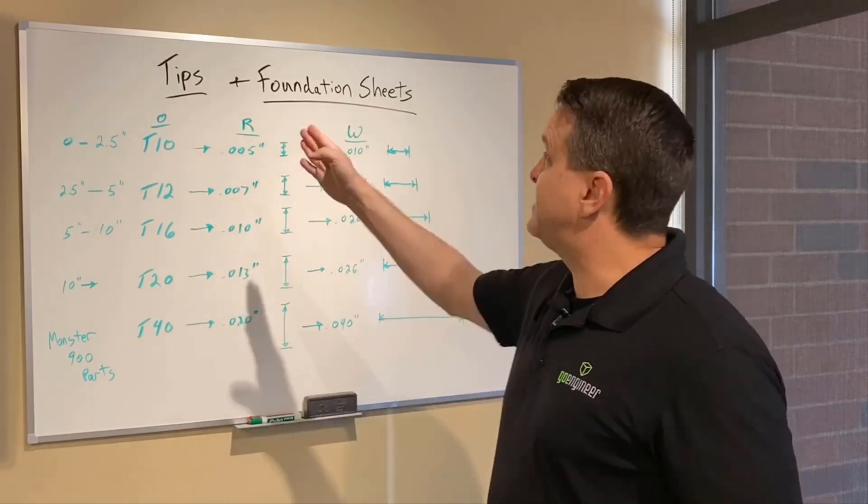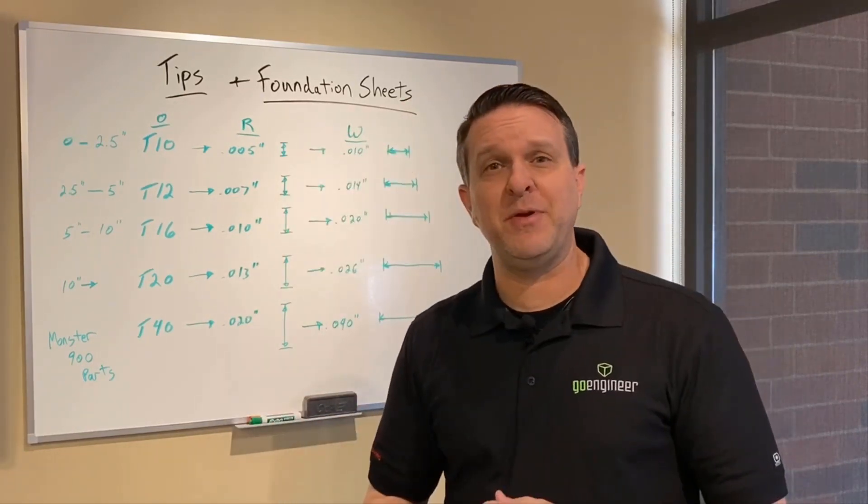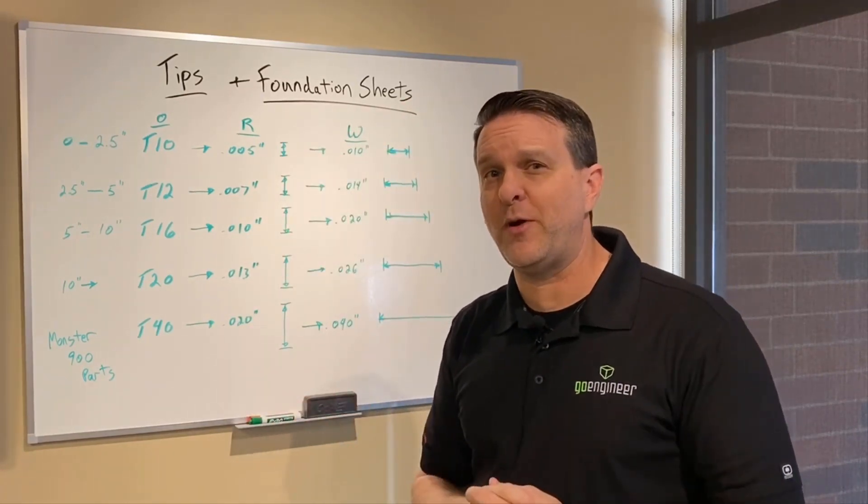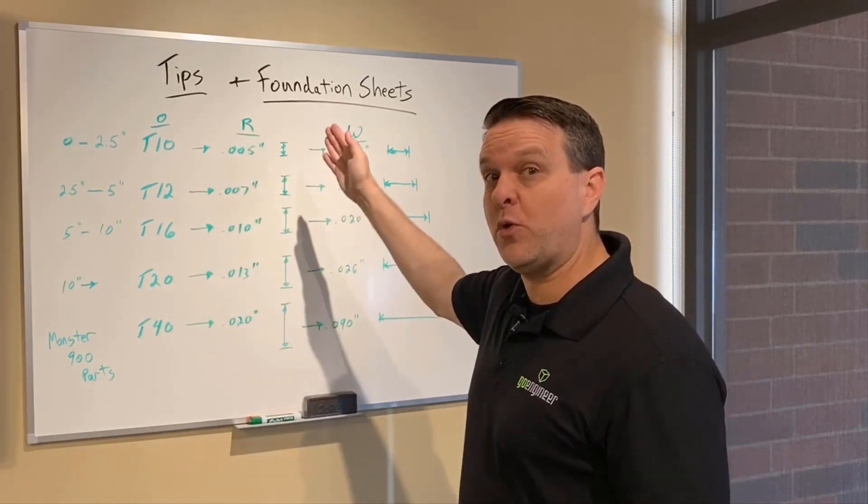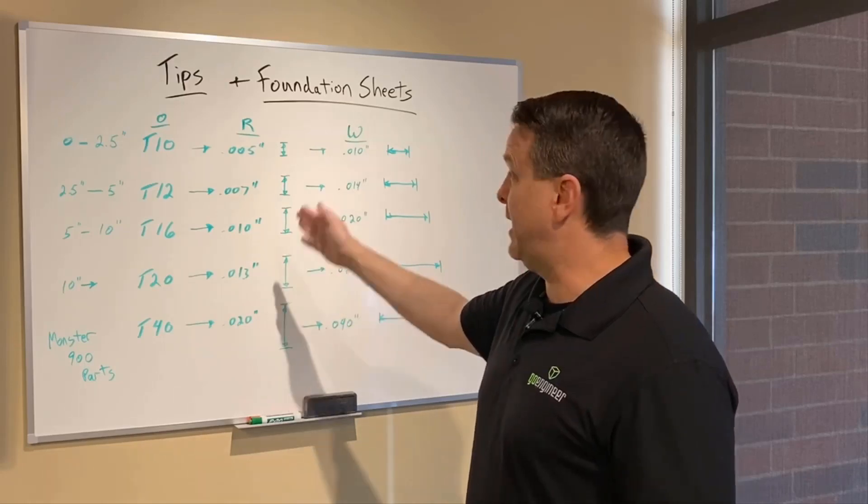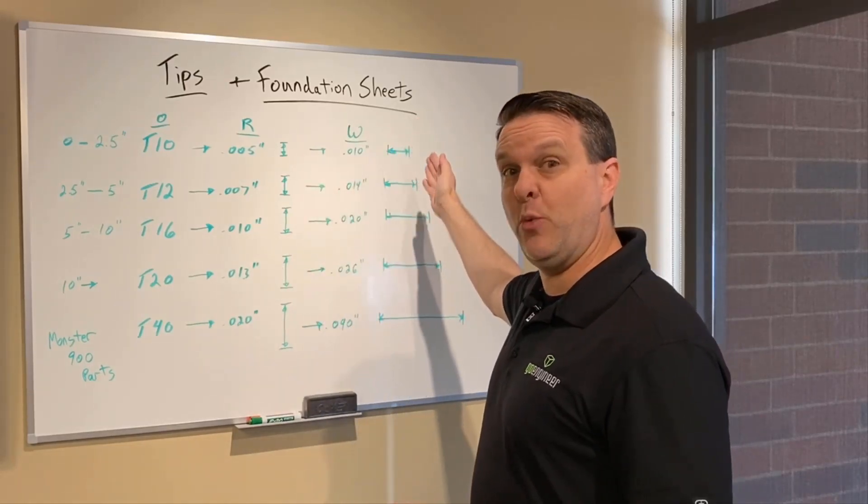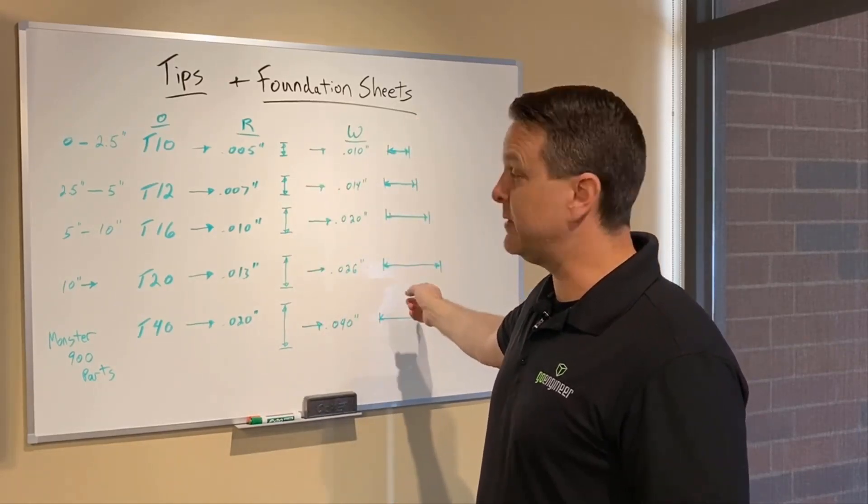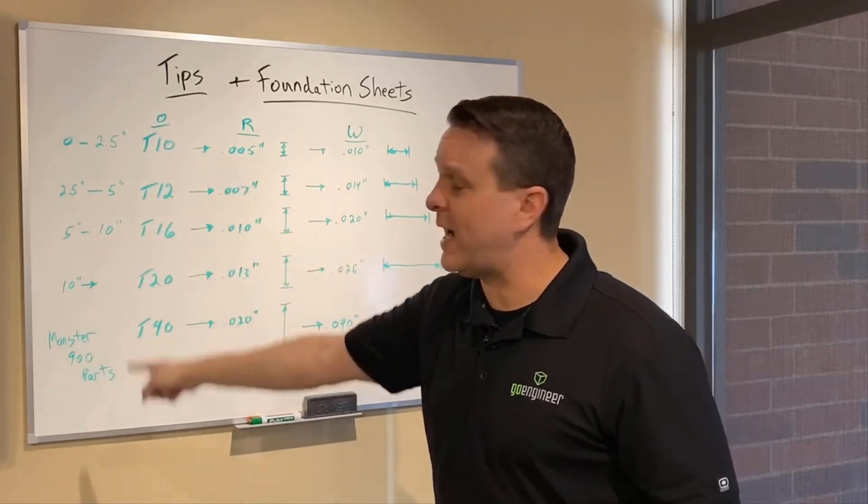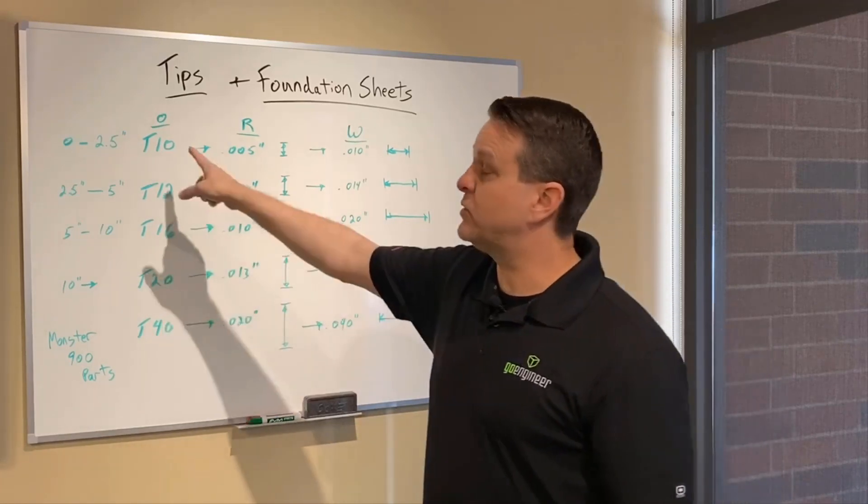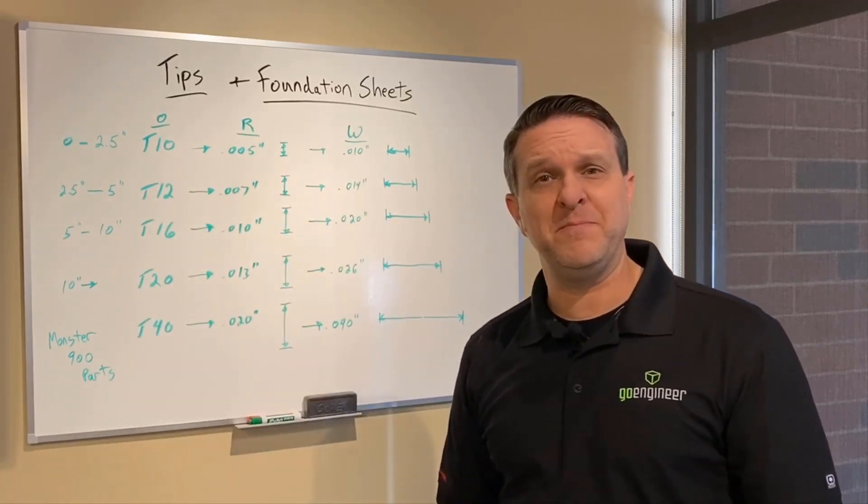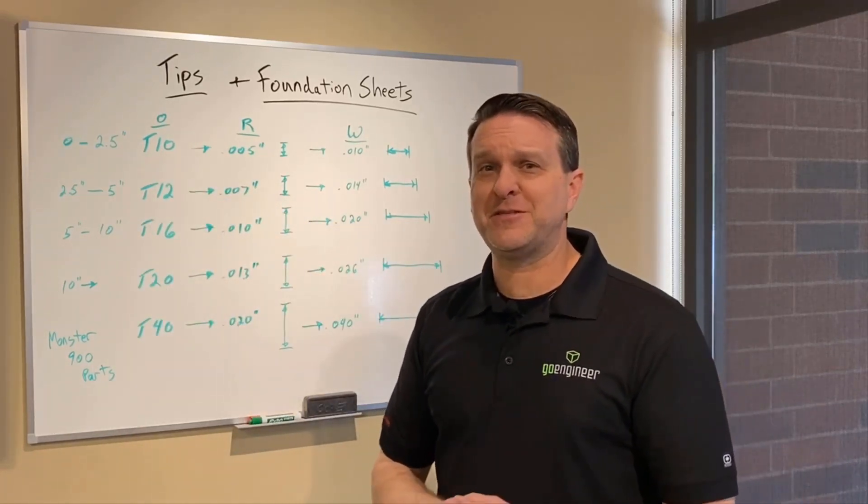So that's the tip and foundation sheet combinations. So hopefully this gives you a better idea about what these numbers mean, how they correlate to a resolution, and how that resolution translates to a width of material being extruded out. So then you can therefore understand why as the part gets bigger, you may want a bigger tip resolution, or why you get into a smaller part, you may want to drop down.